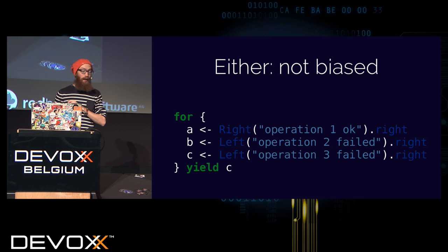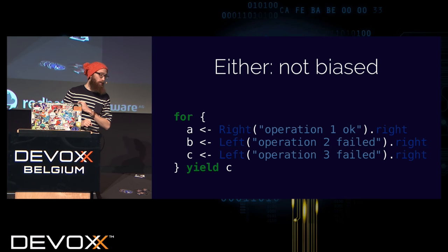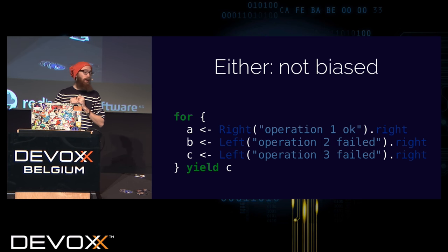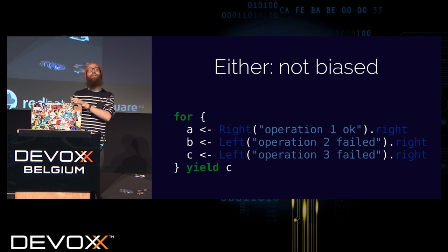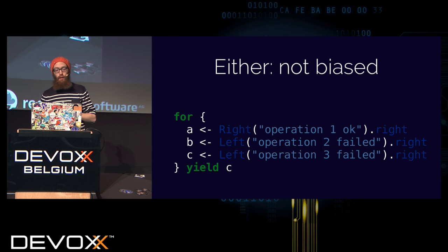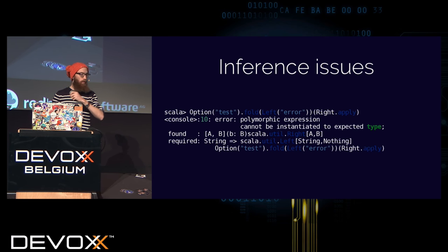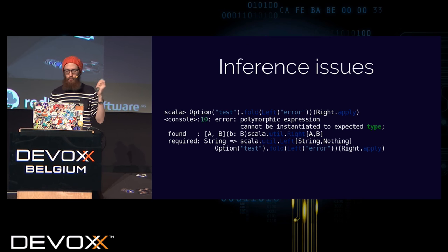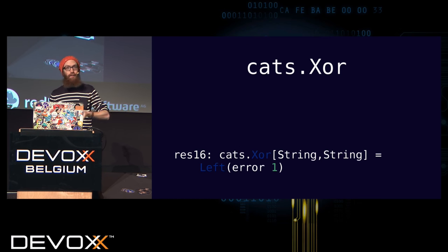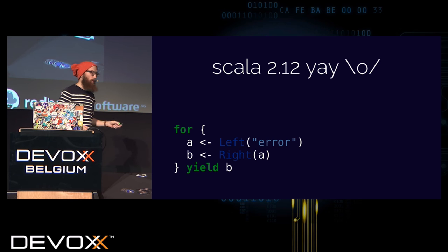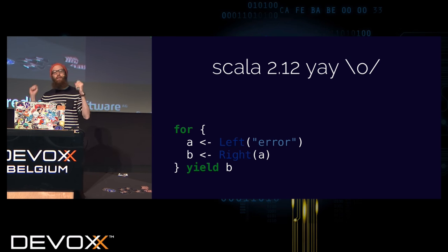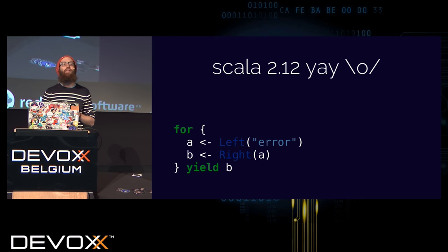I'm very happy to skip some slides because Scala 2.12 was released a few days ago with a very cool fix on either, which was previously not biased. You had to say whether you're interested in the right or the left. There was a pull request merged which fixed all the bad things about either — they're not true anymore if you're using Scala 2.12. It just works. It's been five years I waited for that.